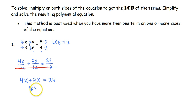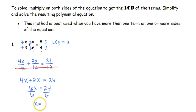Our new equation is 4x plus 2x equals 24. That gives us 6x equals 24, so we divide by 6. You can only cross out the denominator in this one particular case — when you're using the LCD method and you've got the same denominator for all terms when solving. Don't cross them out when multiplying and adding; only when solving using the LCD method.